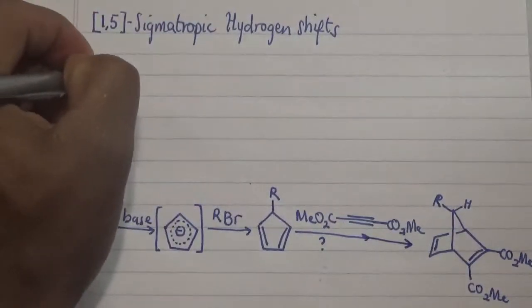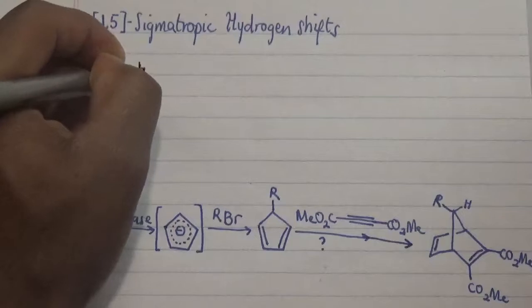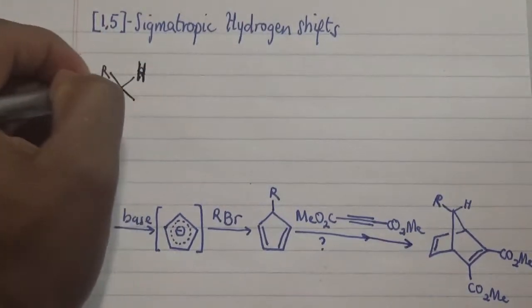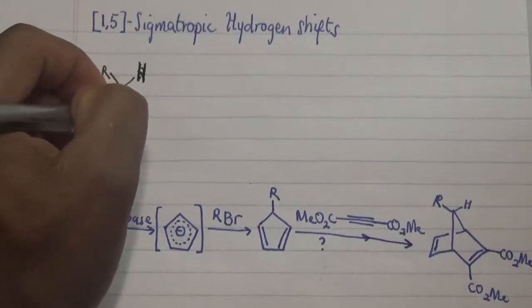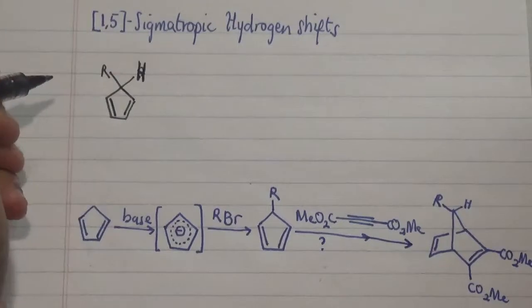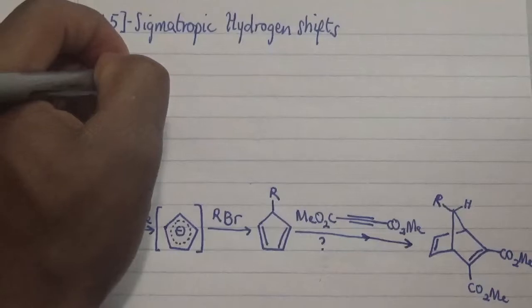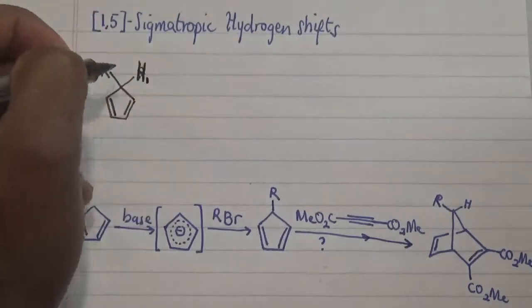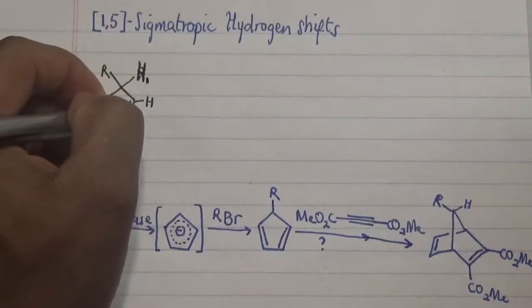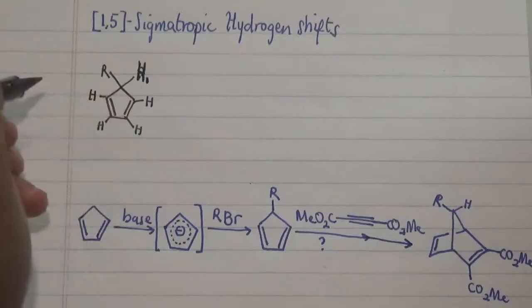So if you have this particular compound here with an R group attached with a hydrogen to a particular carbon, and here we have this cyclopentadiene. In this particular case, let me just label this hydrogen here and show you that there are actually hydrogens on each position to expand the structure.